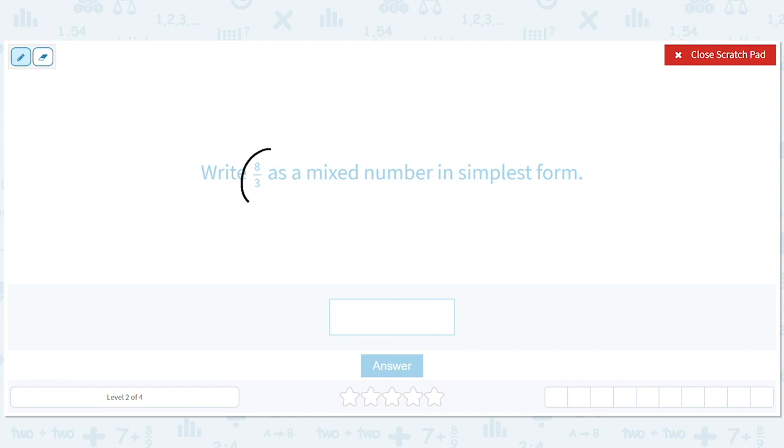Okay. So, 8 thirds would be 8 divided by 3. We'll go in twice. There'll be a remainder of 2. So, we'll have 2, which is this thing. And 2 thirds.